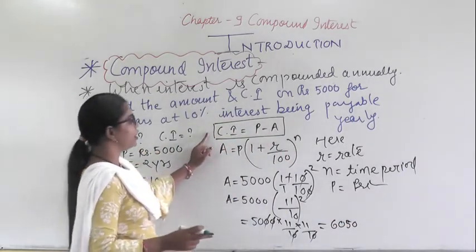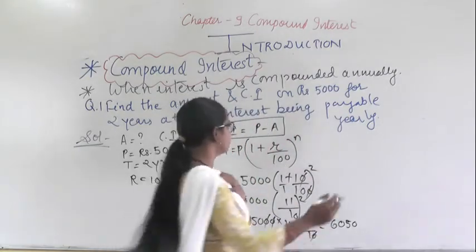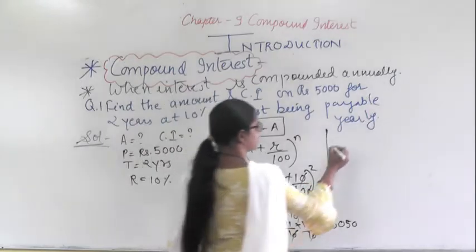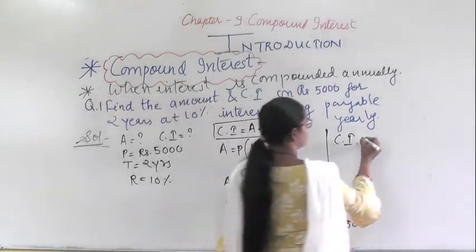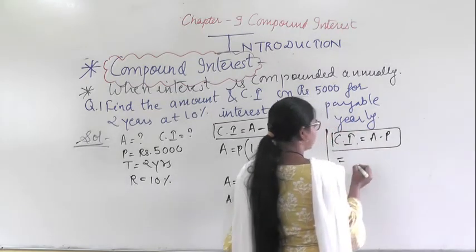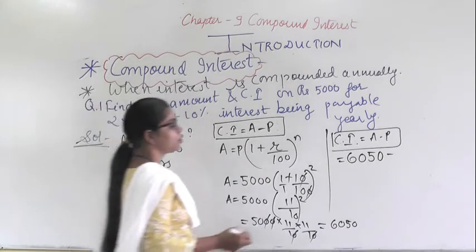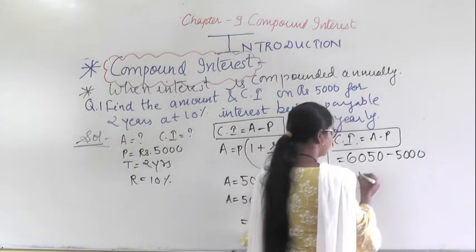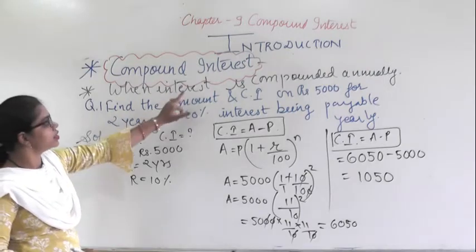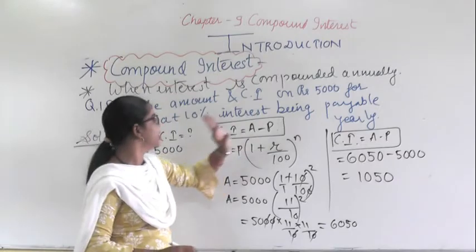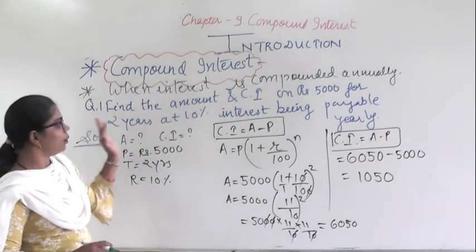Now find the Compound Interest: CI = Amount − Principal = 6050 − 5000 = 1050 rupees. So when interest is compounded annually for 2 years, the compound interest is 1050 rupees. The time period can vary — it could be 1 year, 5 years, or 10 years, and you apply the same method.